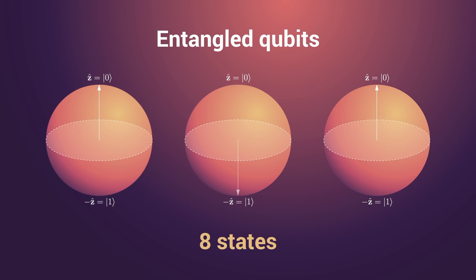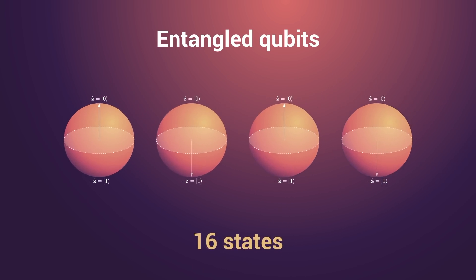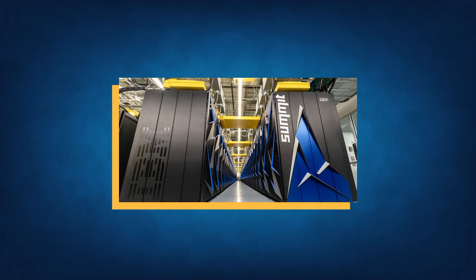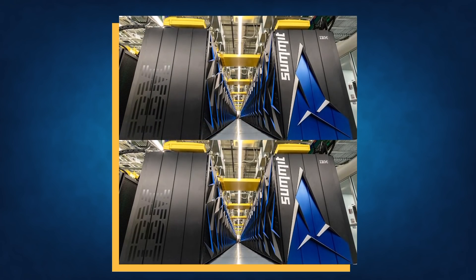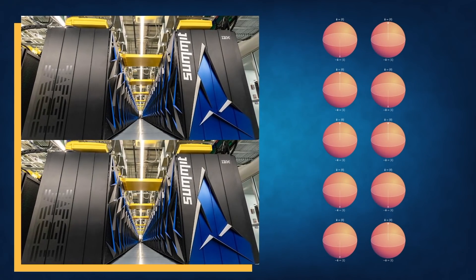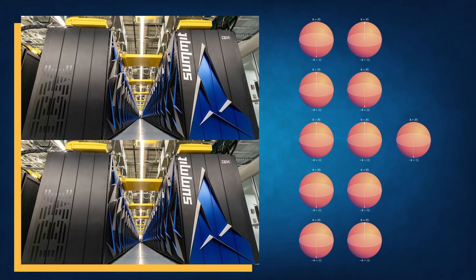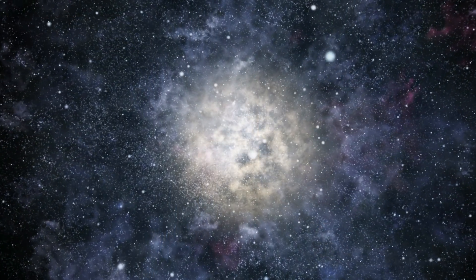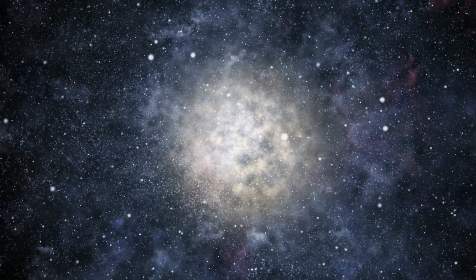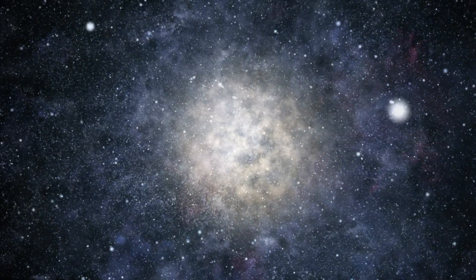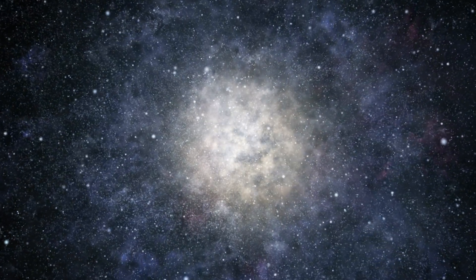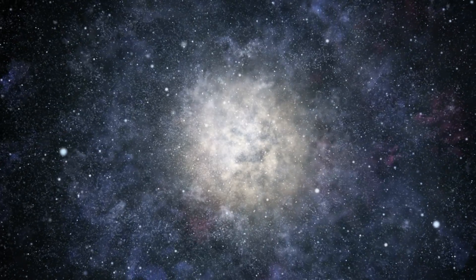Each time we add a new qubit, we double the total number of states. To double the power of today's fastest supercomputer, we would need to double its size. But for a quantum computer, it's just another small qubit. With 300 entangled qubits, the number of possible positions is greater than the number of atoms in the known universe. That's how many bits a classical computer would need to compete.